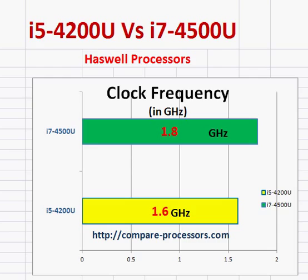So it should be easy to make an apple-to-apple comparison just based upon their clock frequencies, and it should also be able to predict their performances. In terms of clock frequencies, the i7-4500U is 200 MHz higher than the i5 processor. So we should expect a proportional 200 MHz, or about 6 or 7% performance improvement, just based upon this clock frequency.